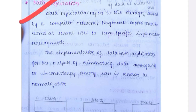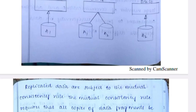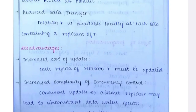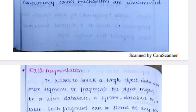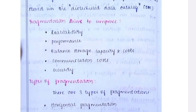Next is data replication, important for two marks. Data replication means the process of eliminating inconsistent data among users — it ensures consistency across the distributed system. Try to remember the diagram for this topic; there is no need to learn separate advantages and disadvantages.